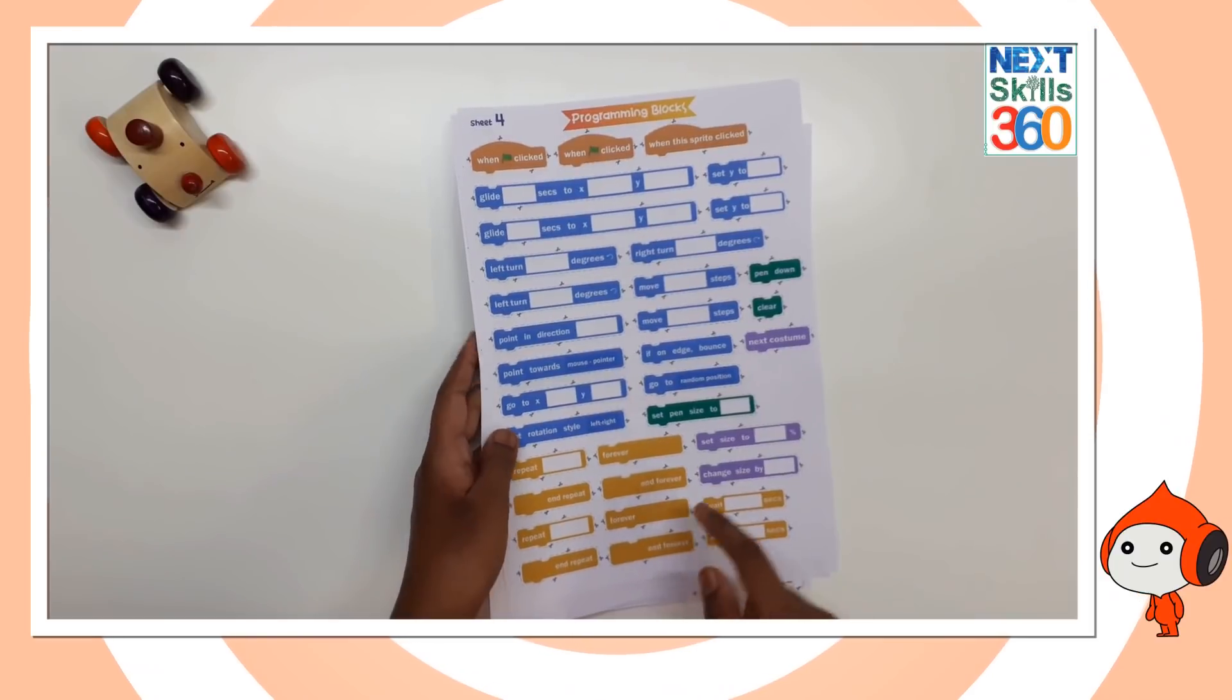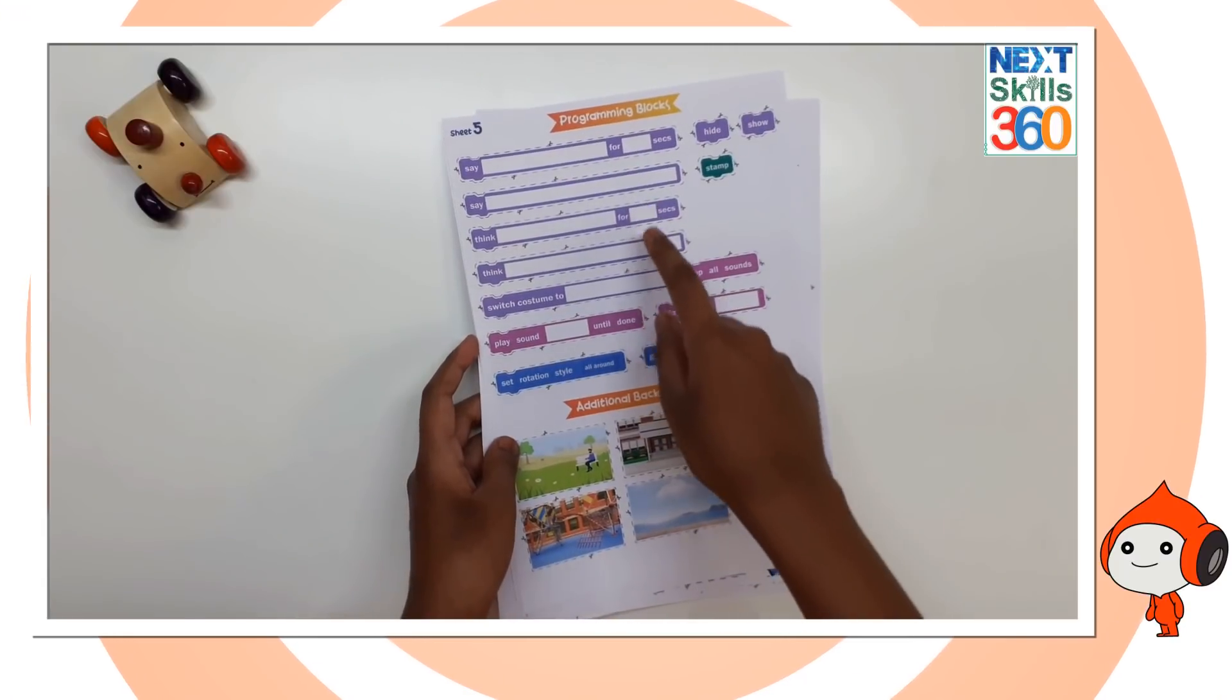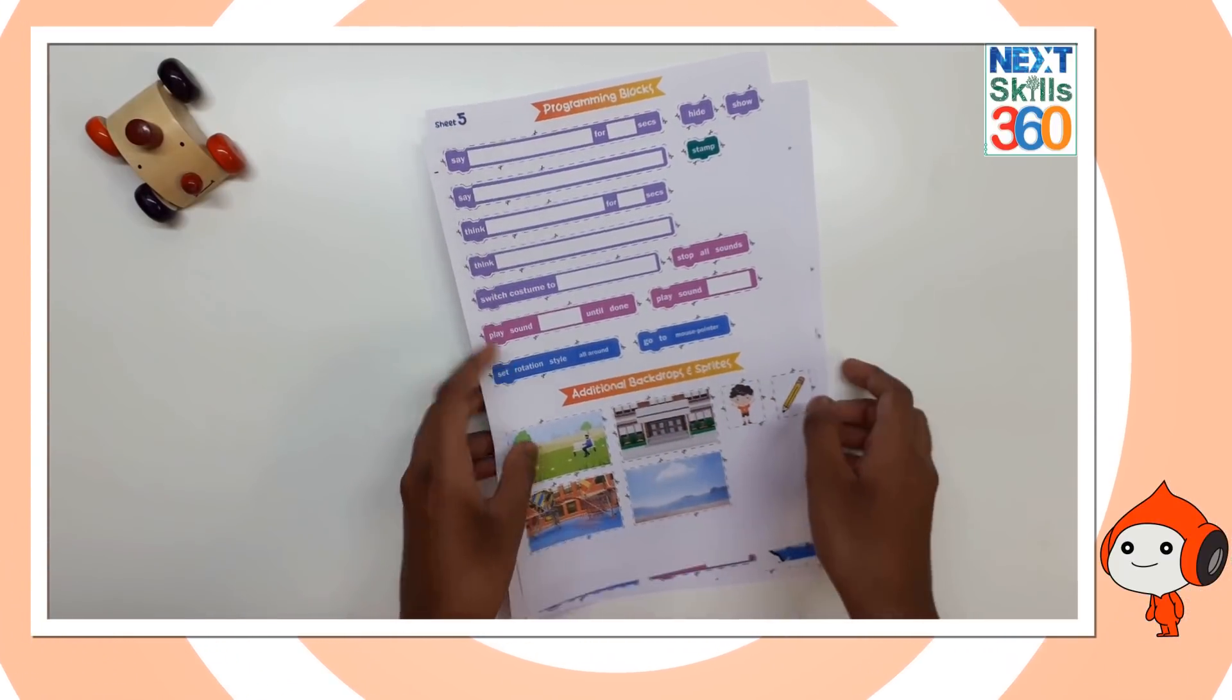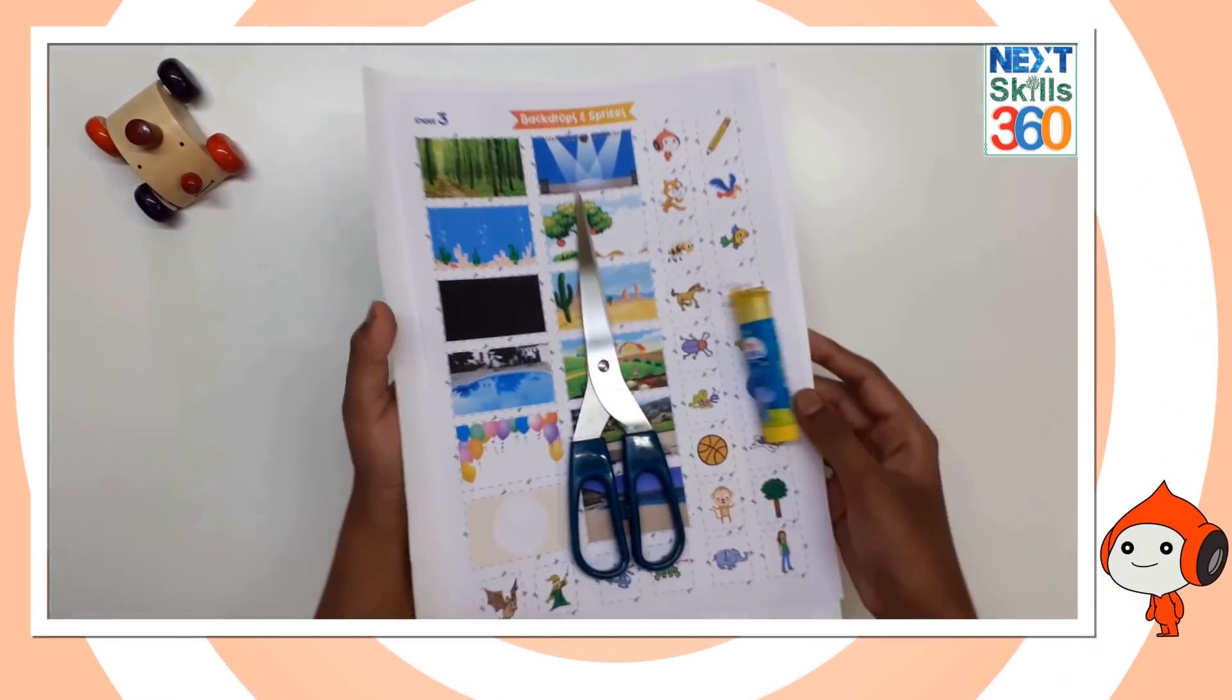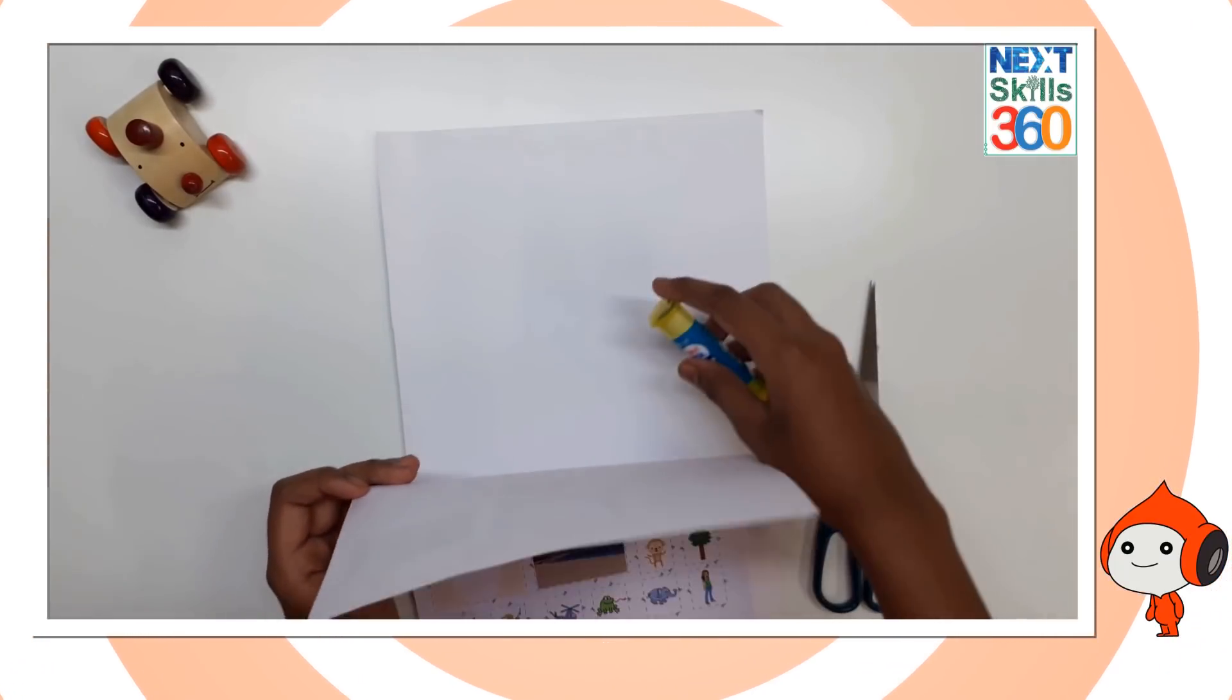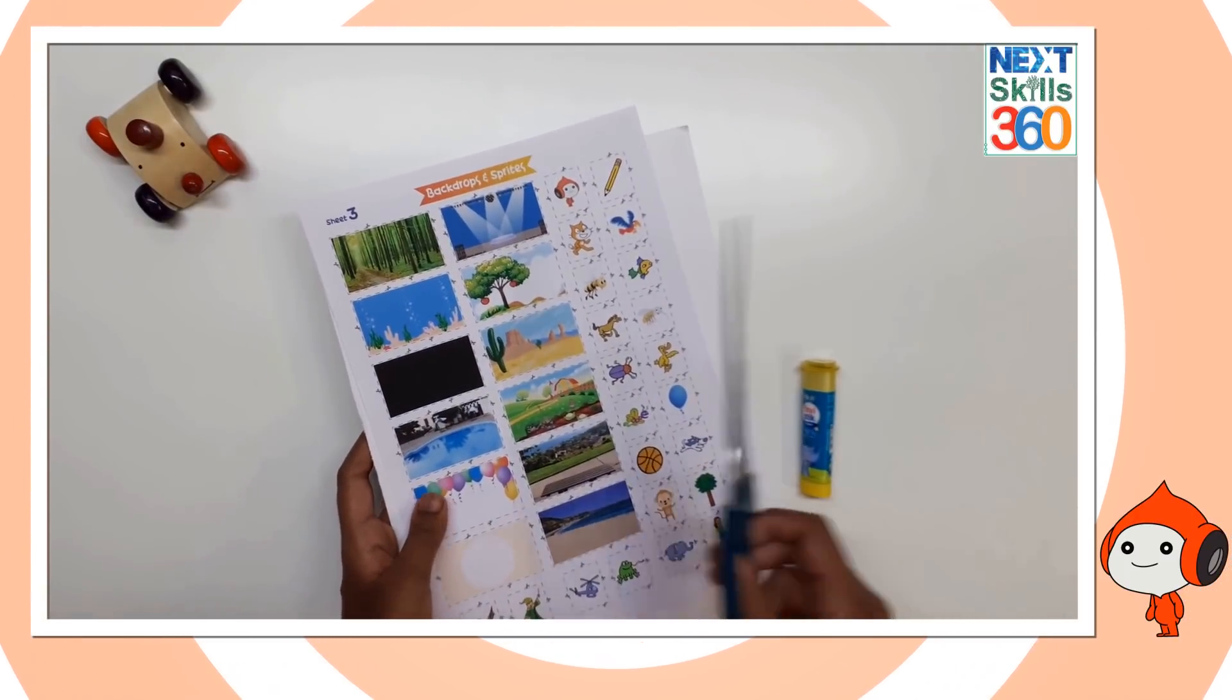Sheet 4, which are our programming blocks. Sheet 5, some more programming blocks along with additional backdrops and sprites. Next, take a piece of cardboard and stick the sheets to them with glue. Once you've stuck the sheets, carefully cut them out with scissors.